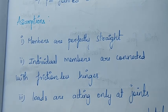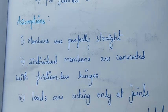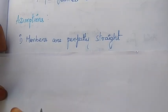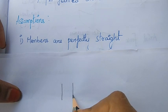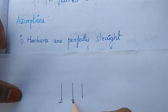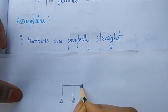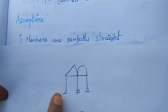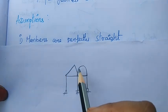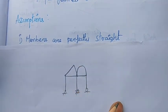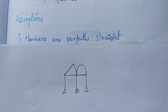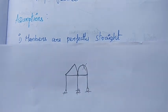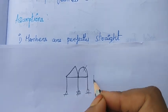For pin-jointed structures, here are the assumptions. First: members are perfectly straight. In the pin-jointed plane frames the stresses are present, and members are assumed to be perfectly straight. We consider only axial (strut/tie) members. This is our first assumption.